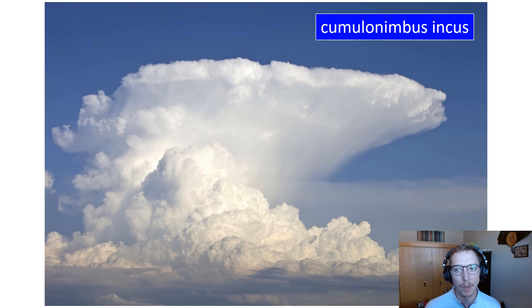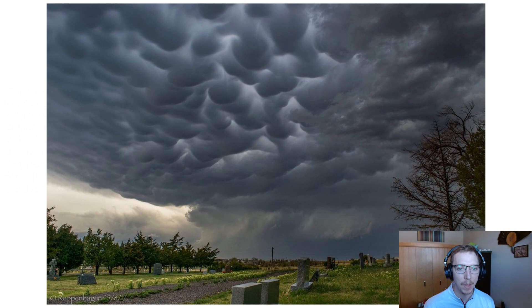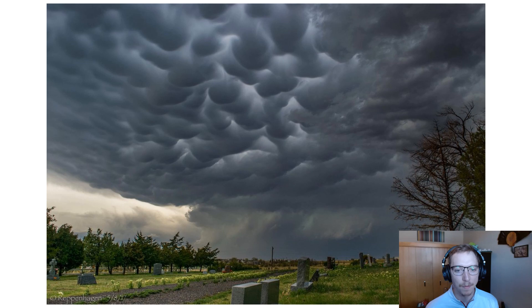Mammatus clouds are smooth, rounded shapes sometimes formed on the underside of cumulonimbus clouds. They result from downdrafts within the clouds — air rushing down and pushing that cloud out, forming these mamma on the underside of primarily cumulonimbus incus or anvil clouds. They can be a sign of pretty strong downdrafts in general, indicating a pretty hefty storm is rolling through.